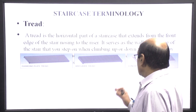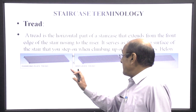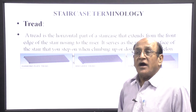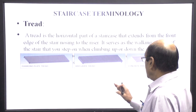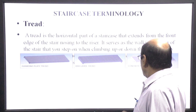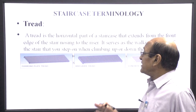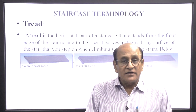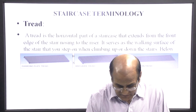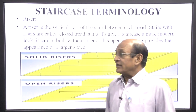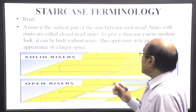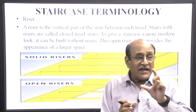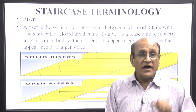There are three types of threads shown in the drawing: diamond plate thread, bar grate thread, and concrete pan thread. These threads are provided to protect the person from slippage. A riser is the vertical part of a stair between each thread. If there are two threads, the vertical height between them is called the riser.